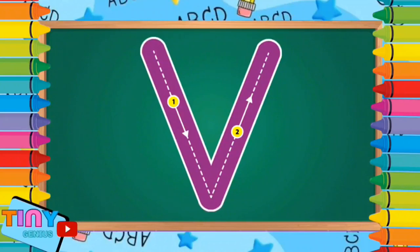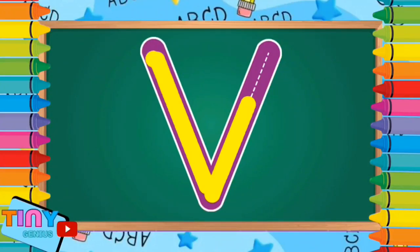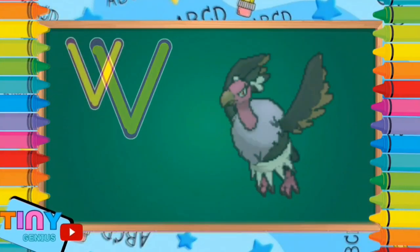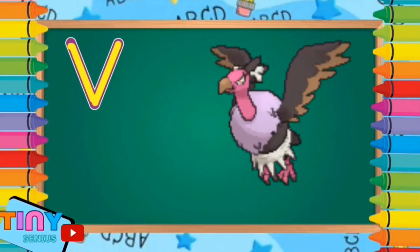Next letter is letter V. Slant down, slant up. V is for vulture.